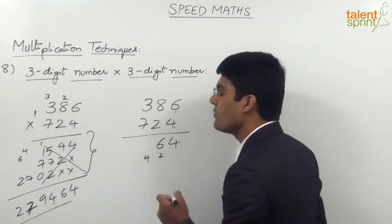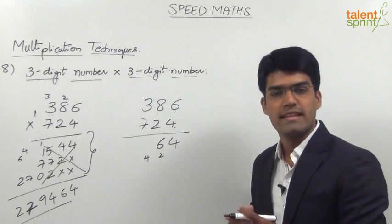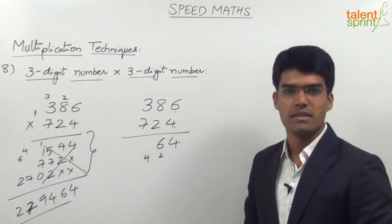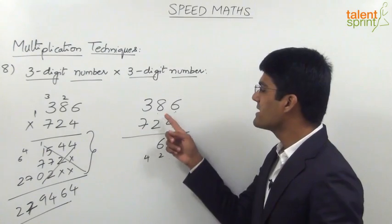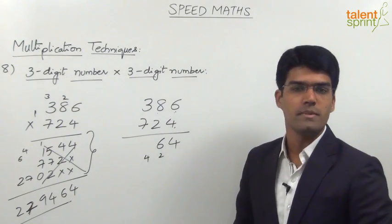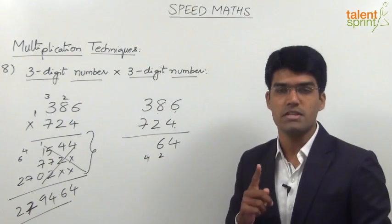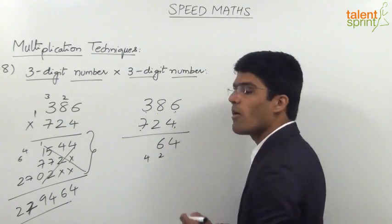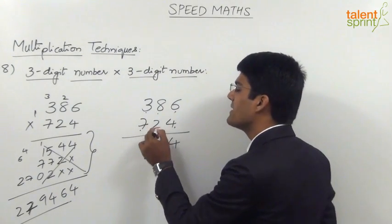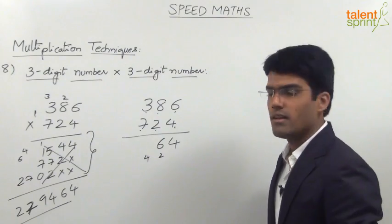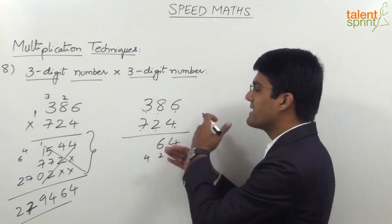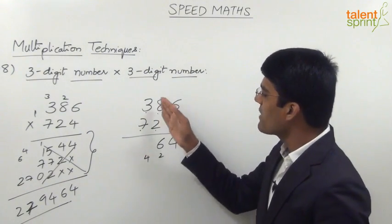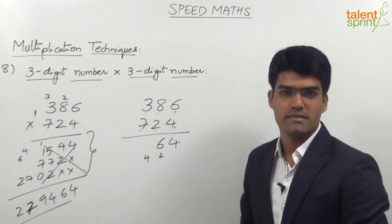44 plus 2 carry is 46, so we take 6 in the answer and 4 gets carried forward. The first two steps are quite similar to two-digit multiplication. Now comes the third step, which is the most important one — here we multiply unit places with hundreds places of opposite numbers, and also multiply the tens places, adding all three products. So it's a cross multiplication of units and hundreds places, plus the tens places multiplication.